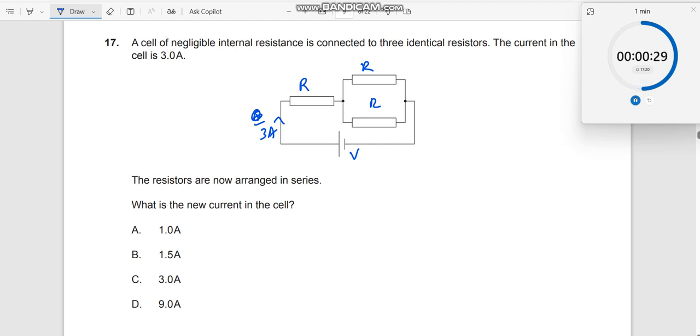So what we do is, first let us find out the effective resistance. So which will now be equal to, this will be your R, this will be your R by 2, and then this will be your V. So which will be R plus R by 2 will be effective resistance.